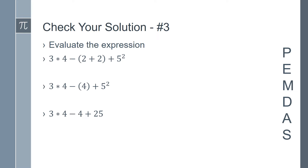Next we move on to multiplication and division, working from left to right. 3 times 4 is 12. So we have 12, minus 4, plus 25. Now we're left with addition and subtraction, once again working from left to right. 12 minus 4 is 8, so the expression is 8 plus 25. And finally we can evaluate 8 plus 25, and we find the final answer is 33.